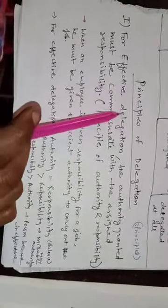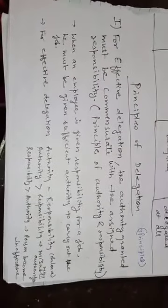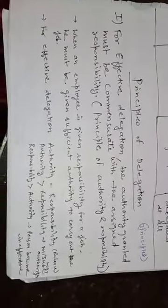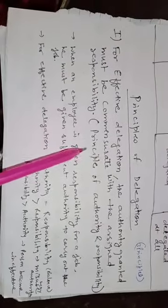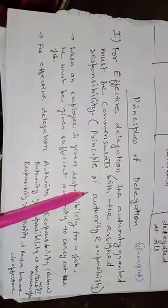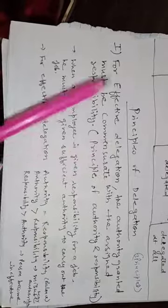The next topic is principles of delegation. There are generally three principles of delegation. The first principle is for efficient delegation: the authority granted must be commensurate with the assigned responsibility. This is related to the principle of authority and responsibility, which was already covered in chapter two.